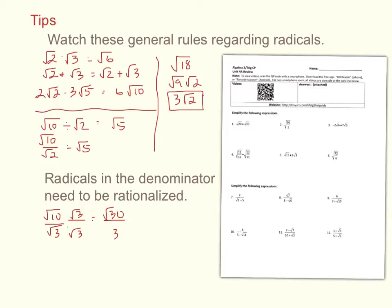The other case is when you have something like root ten over one plus root three. You still have a root on the bottom but also a number, so you can't just multiply by root three — that won't get rid of the radical. In this case, you multiply by the conjugate. The conjugate is exactly the same binomial but with the opposite sign in the middle, so you multiply top and bottom by one minus root three.